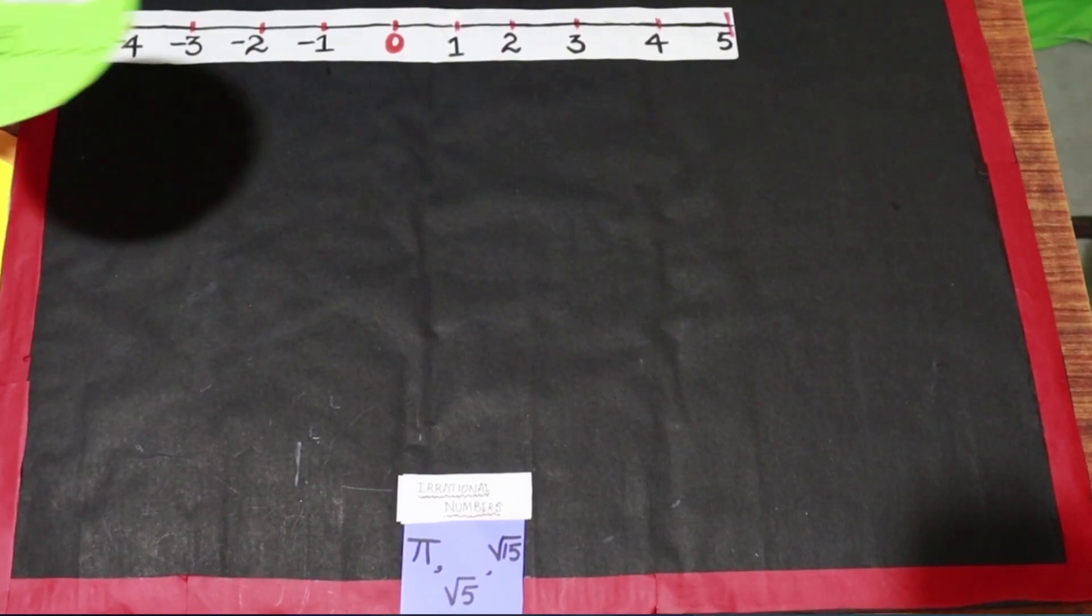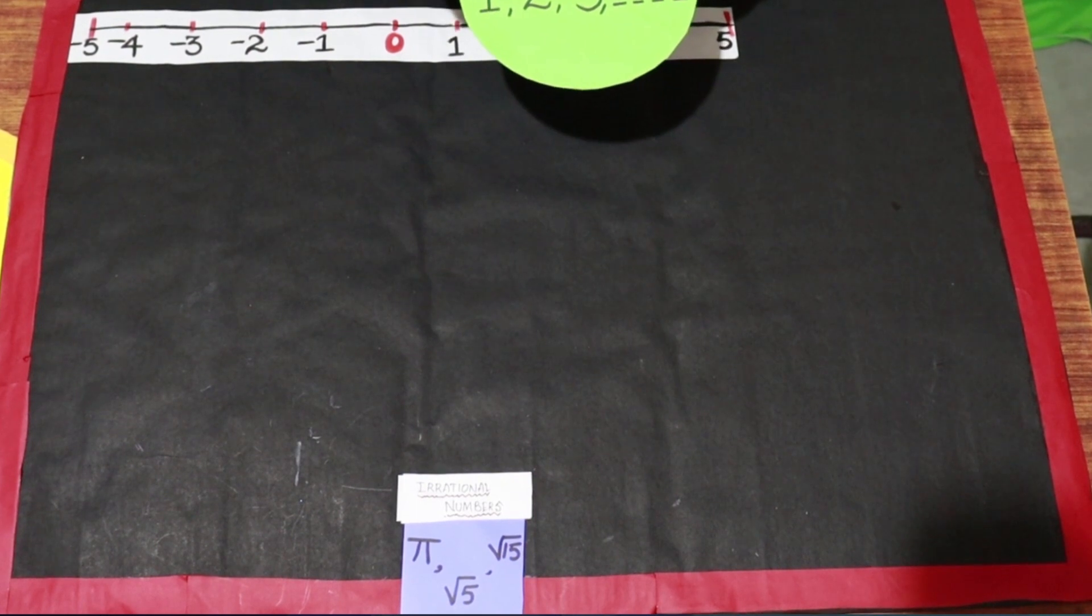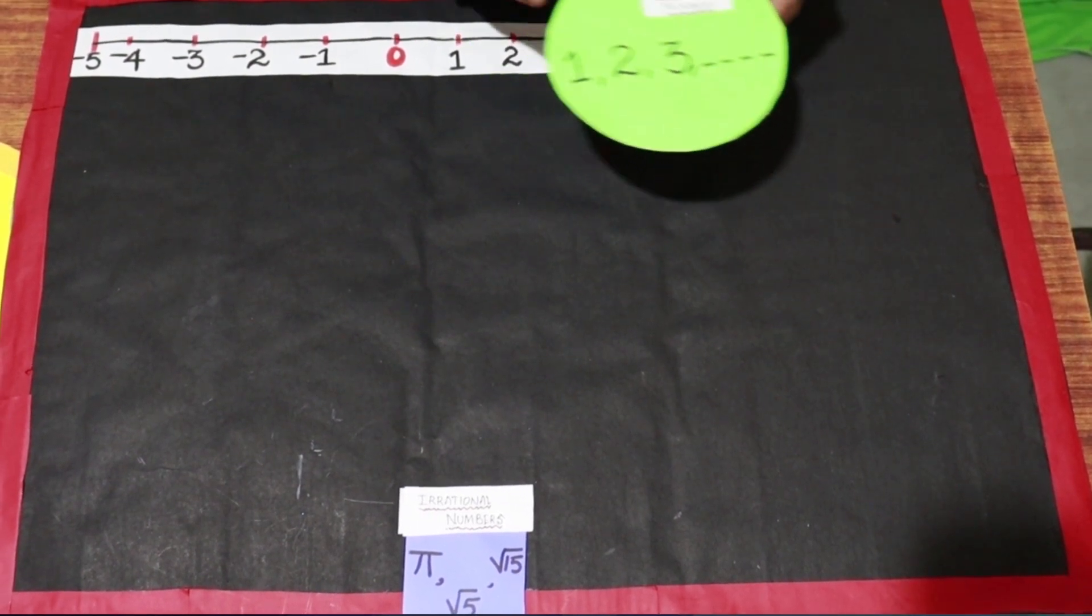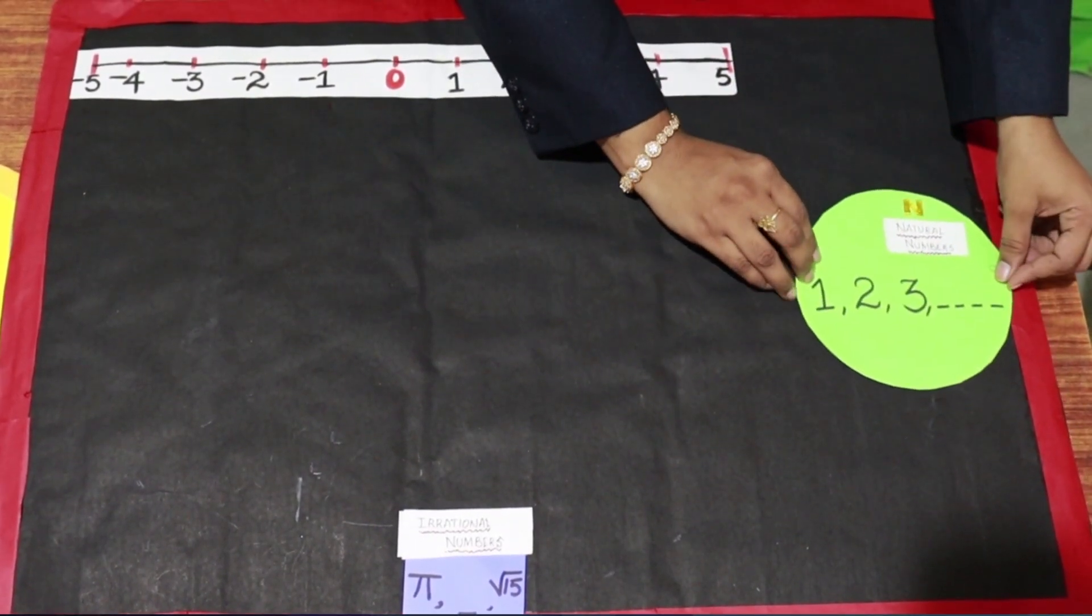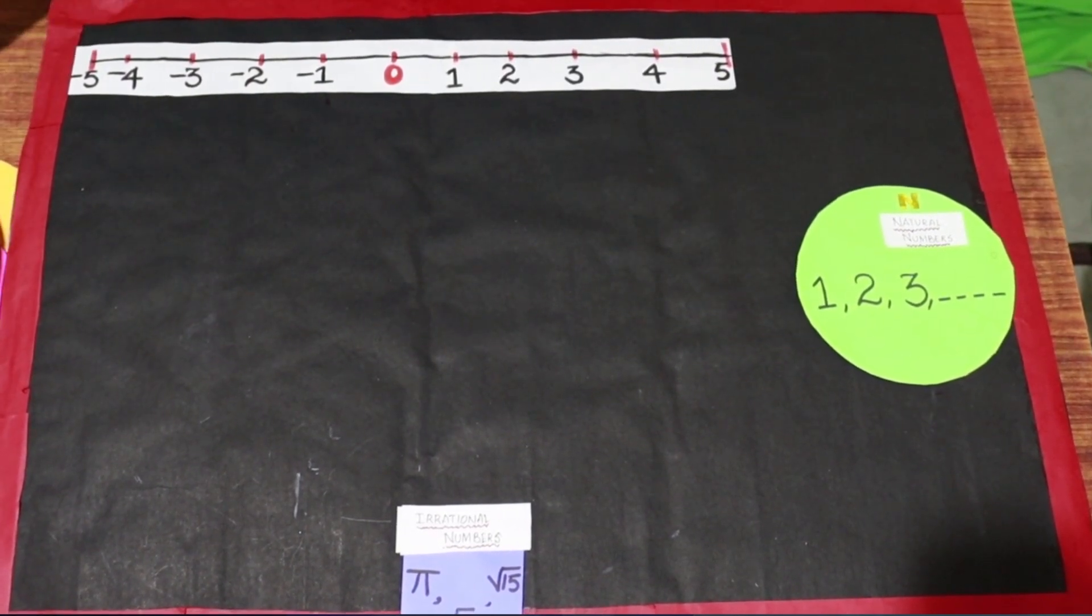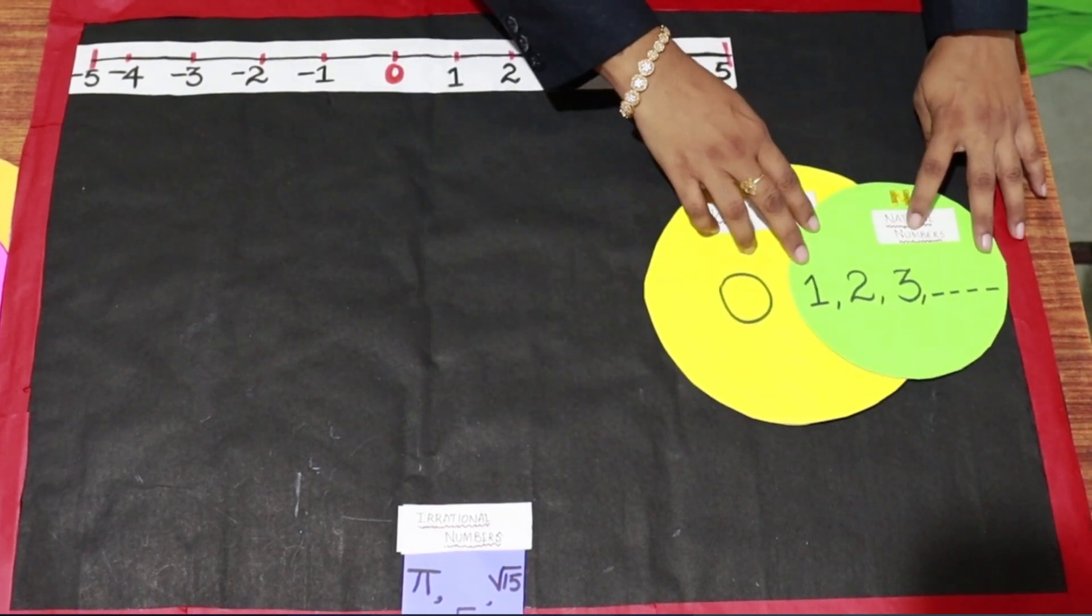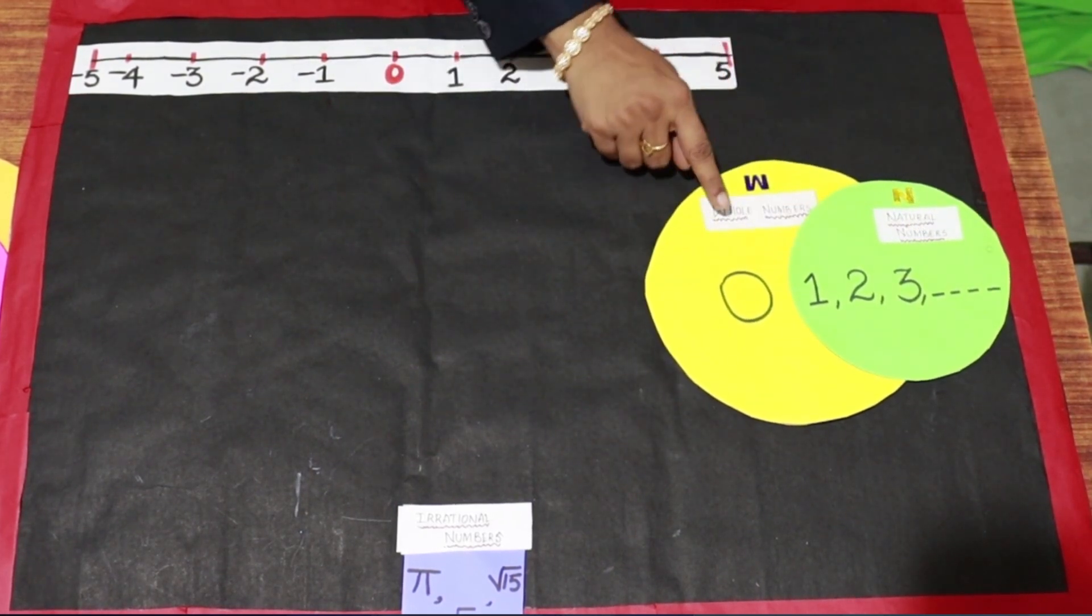Recapitulation is a type of condensed revision. Let us recapitulate what we have. Let us start with the counting of numbers. The numbers from 1, 2, 3 and so on are called natural numbers. These numbers are denoted by the letter N. If we include zero in natural numbers, we get the set of whole numbers.